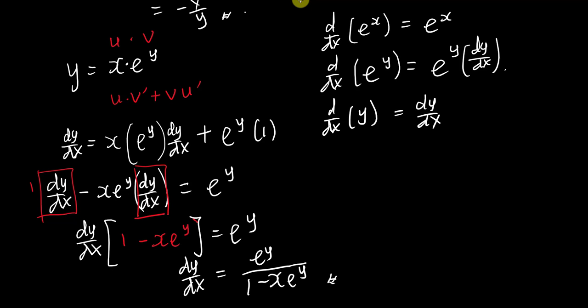This part is not very hard, but the key ideas are: first, recognize when to use product rule, quotient rule, or chain rule; second, after differentiating you may have more than one dy/dx term, so you need to factorize them out and make dy/dx the subject.